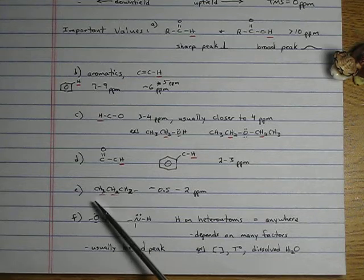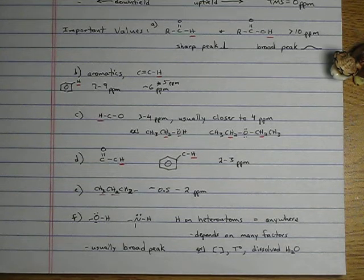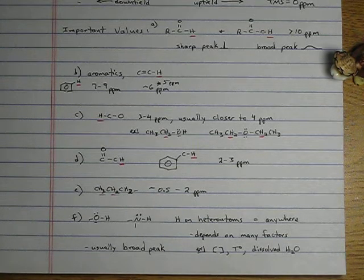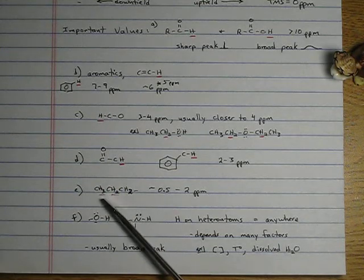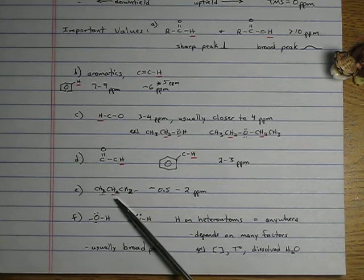And the next thing to know, saturated alkanes. If you just have a CH3, CH2, CH2 chain, those guys come between 0.5 and 2 ppm. Methyls at the end of the chain usually come around 0.9 ppm. Methylenes, our CH2 groups, they usually come a little downfield of 1 ppm, 1.1, 1.2 ppm.